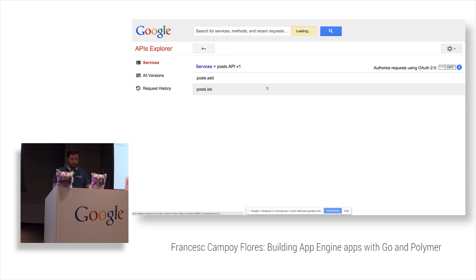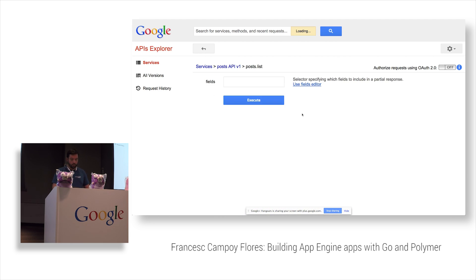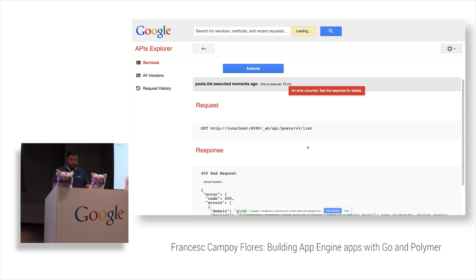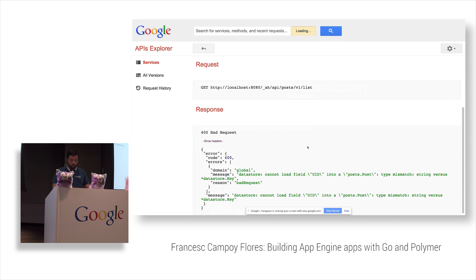Let's see if our list still works. No — there's a type mismatch because we stored strings before and now we're trying to decode them as keys. We need to clear the Datastore and start fresh.